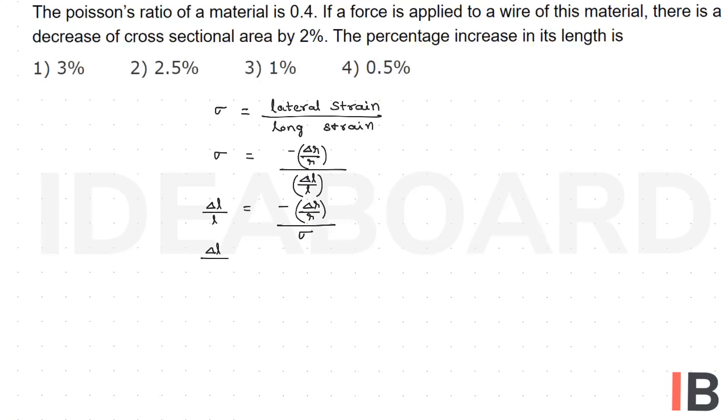If you consider the percentage, delta L by L times 100 equals minus delta R by R times 100, divided by sigma.